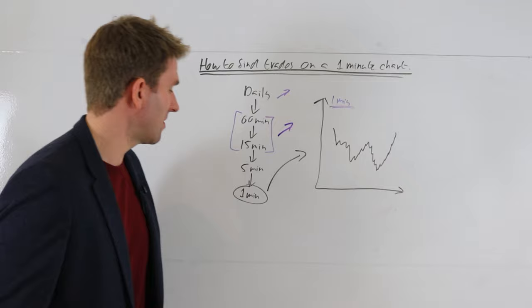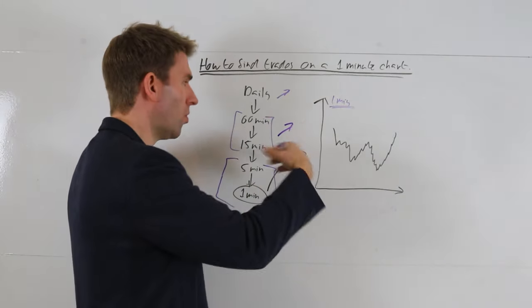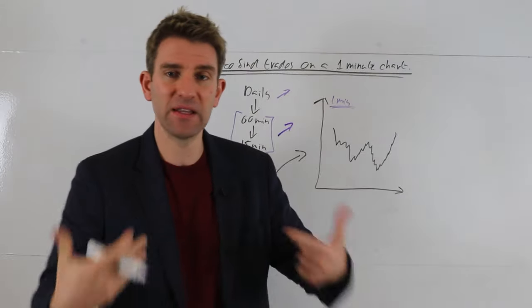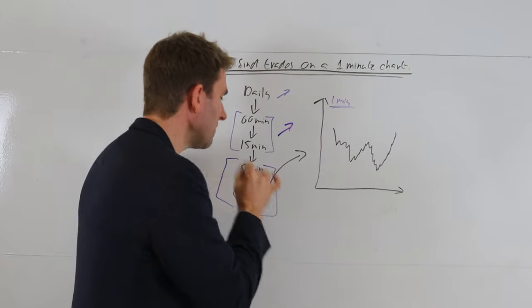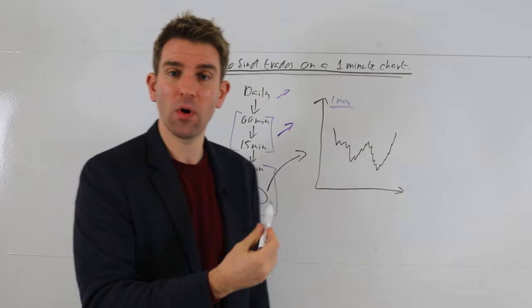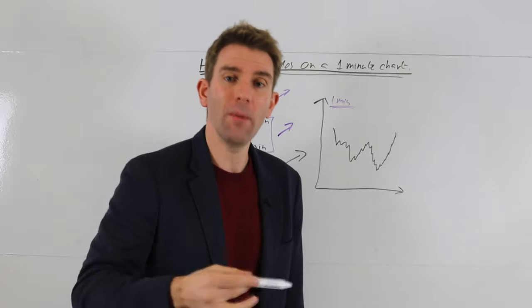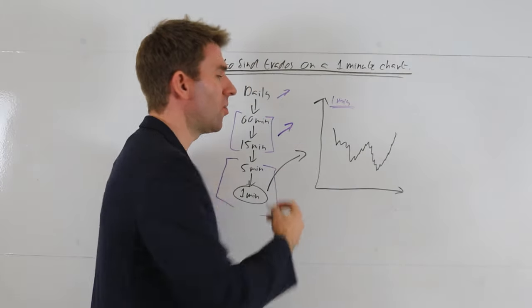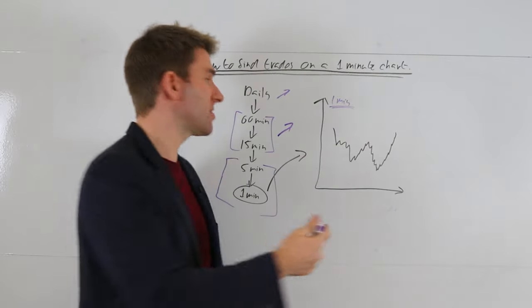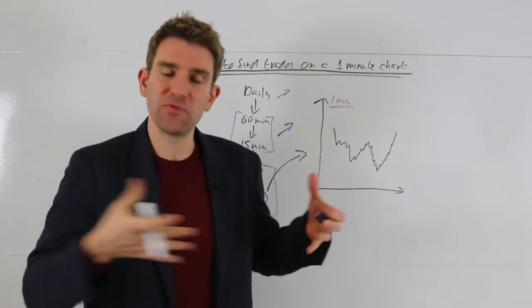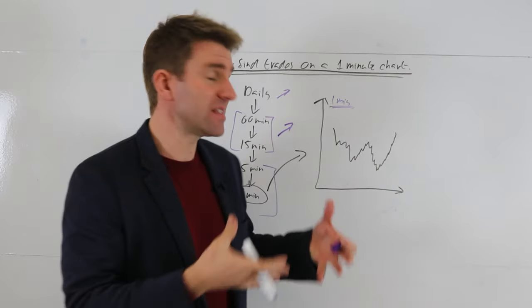And now we start to go down to our lower time frames. And again, we don't have to do all of these time frames, we're just trying to get the information we need. So we now go down to maybe a five or three before we finally go down to the one. So before we get to the one, we've done a lot of work on our way down there and we've said okay, on our one-minute time frame now we're looking for a long on our one-minute time frame, because we're aligning ourselves with the higher time frames which are long as well. Again, I've just used a kind of broad example here, obviously it's never going to be as simple as this.